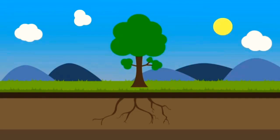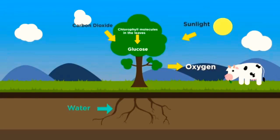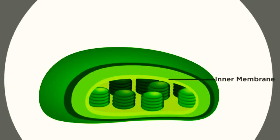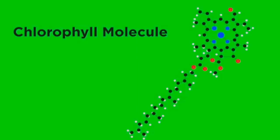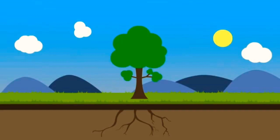Photosynthesis happens when the plant gets sunlight and absorbs carbon dioxide and water, producing oxygen and glucose from the chlorophyll molecules in the leaf. As you can see in the leaf, there are cells called chlorophyll that play a role in the photosynthesis process. From this reaction, you learn that carbon dioxide plus water plus light energy produces glucose and oxygen.